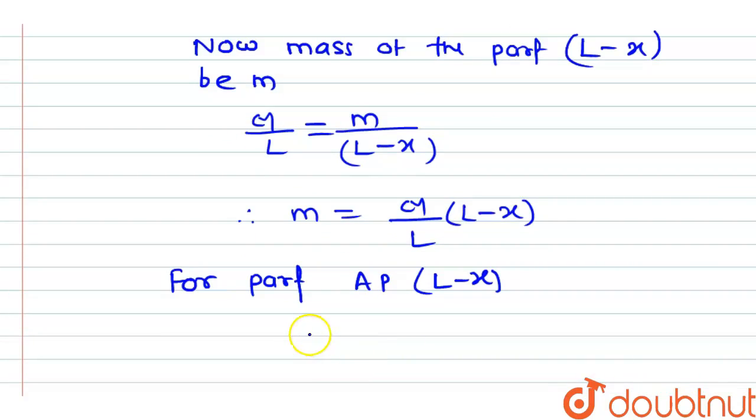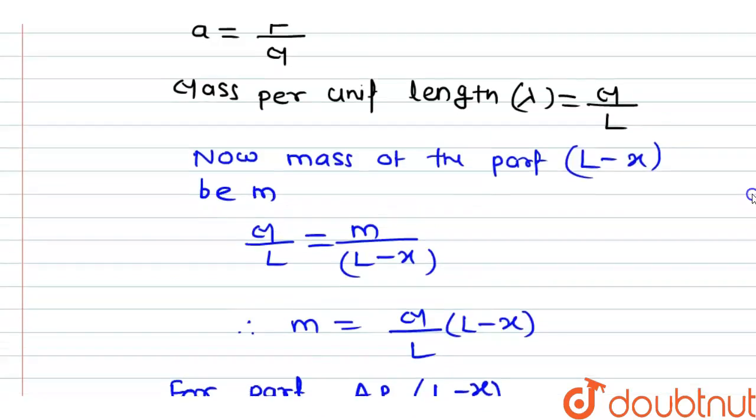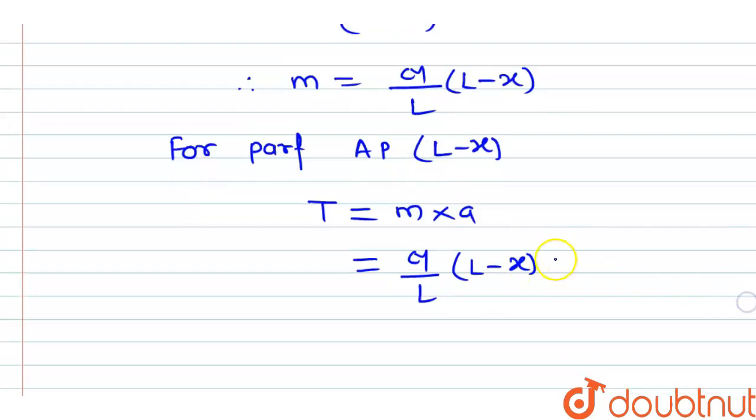Capital T equals small m, that is mass of that part, times acceleration. But we know that small m is capital M by L times L minus x, and the value of acceleration is F divided by capital M.